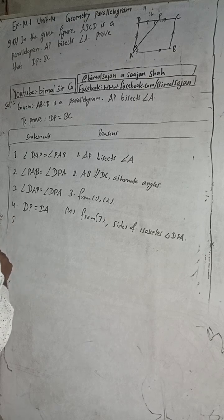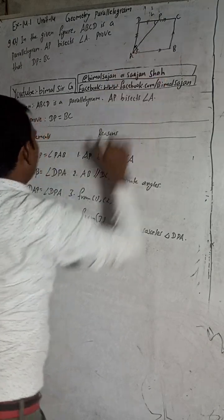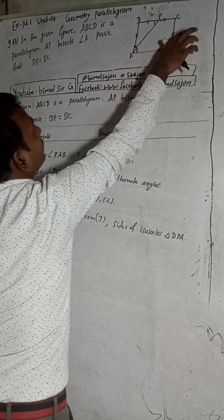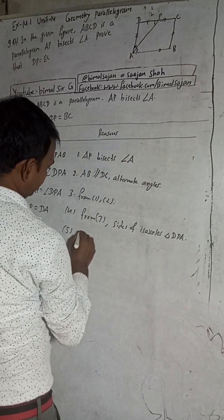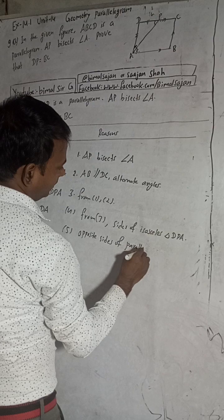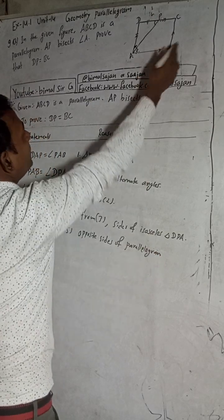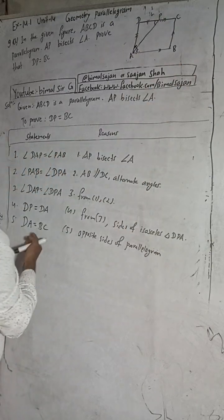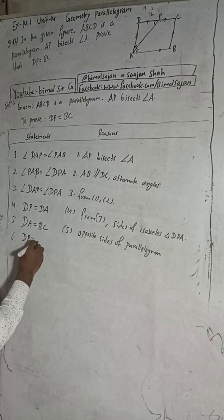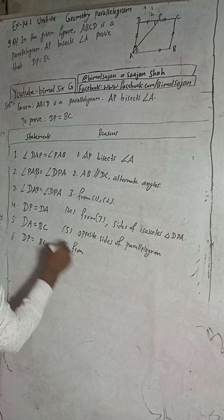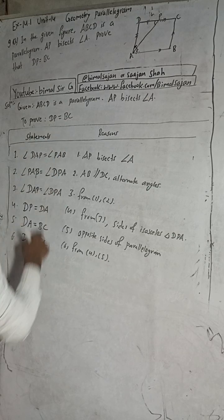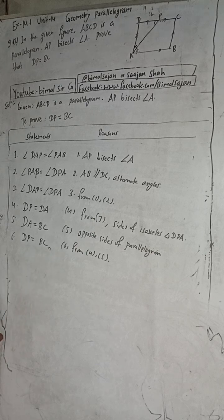Now, DA is equal to BC. The reason is that opposite sides of a parallelogram are equal and parallel — because ABCD is a parallelogram, DA equals BC. That is statement number 5. Finally, from statements 4 and 5: DP is equal to BC. This is what we had to prove — DP equals BC.